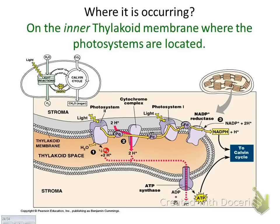In cyclic electron flow, sunlight hits photosystem 1 (P700). The electron goes down and then comes right back to P700 — P700 loses two excited electrons but they return. This cyclic electron flow makes a cycle and produces ATP.